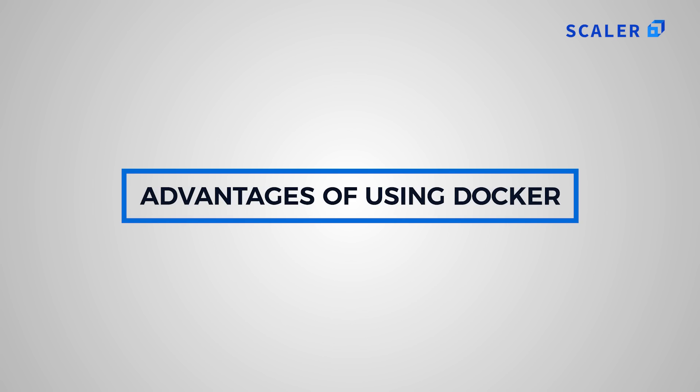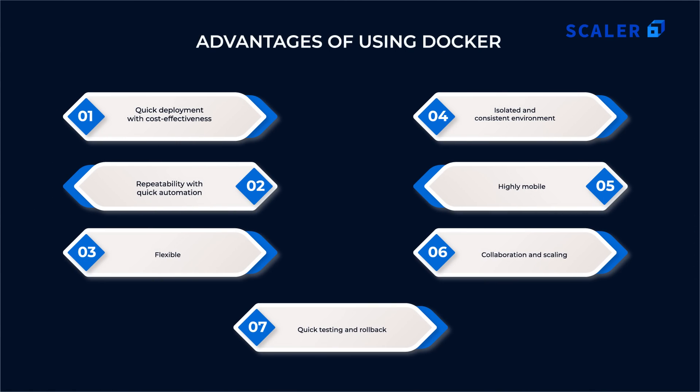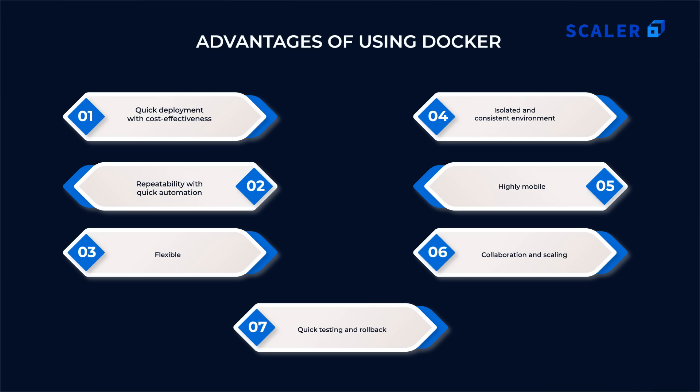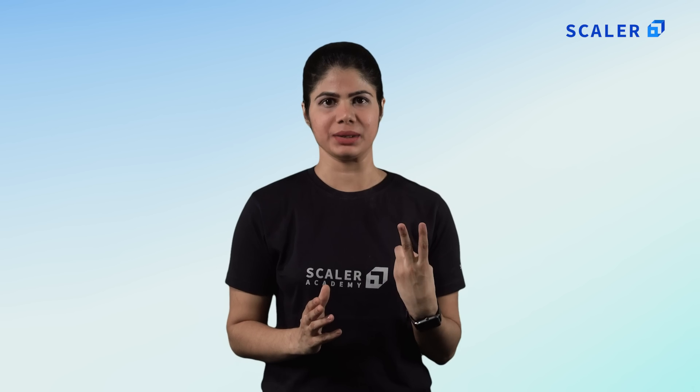Advantages of using Docker: First, quick deployment with cost-effectiveness — Docker-powered containers can be deployed quickly without any lags, and the deployment process can be shared with new apps without extra overhead. Second, repeatability with quick automation — the entire coding development speeds up using repeatable code and configurations, with simple maintenance through automated features.